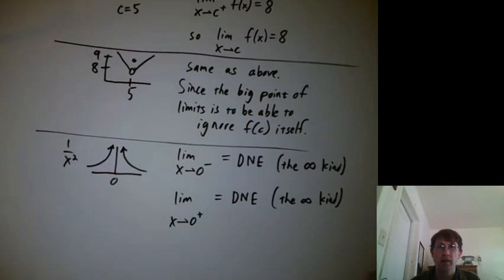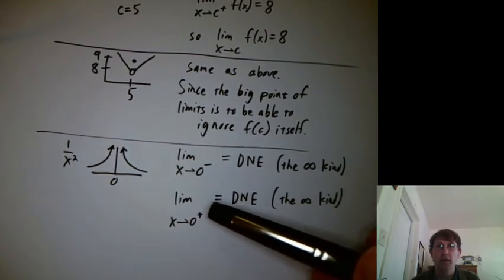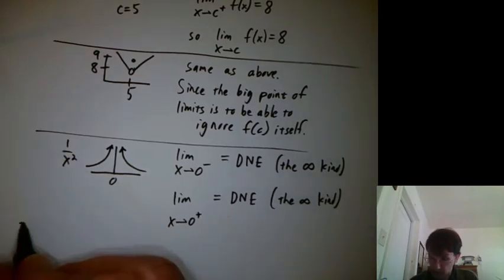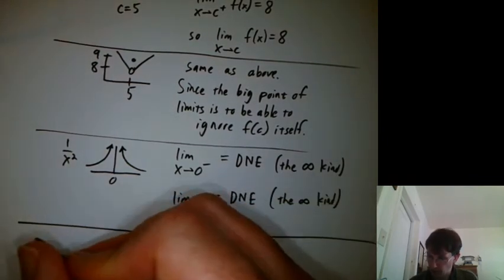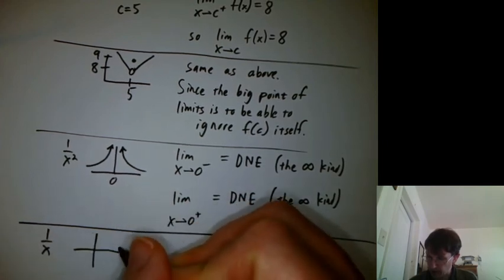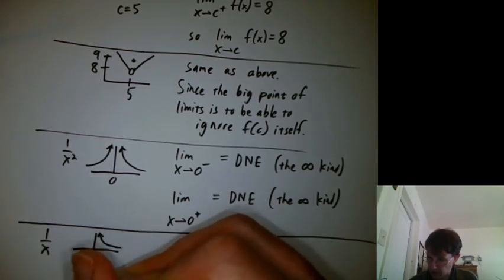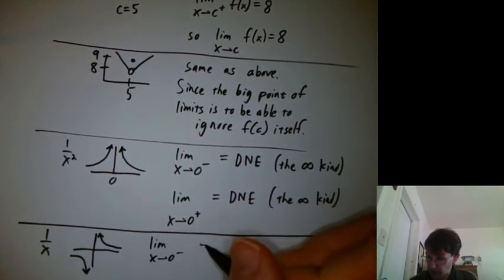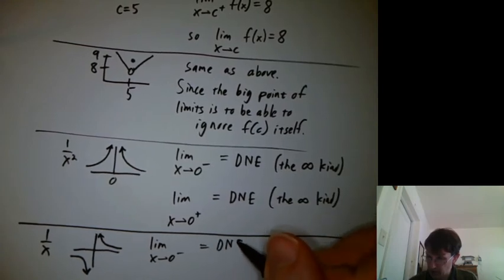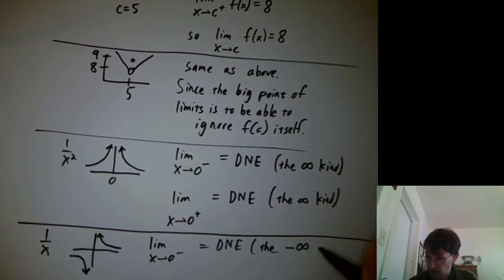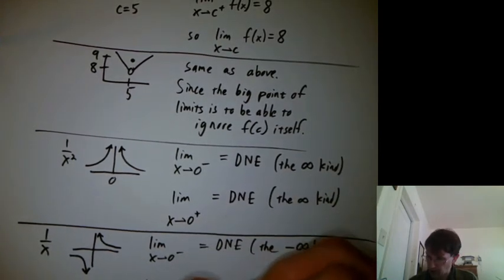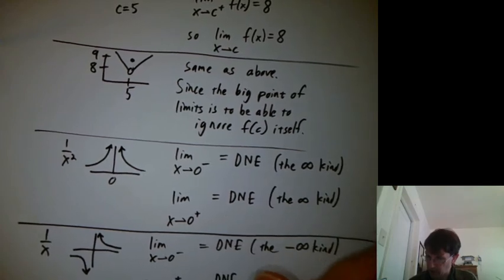Later in the chapter, we'll actually then use this to say that the limit without the minus or plus is still DNE but the infinity kind. So that's not going to be too controversial. But what if I had just one over x? Then that has this behavior. What's the limit as x goes to zero minus? It's again DNE, the minus infinity kind. How about x goes to zero plus?